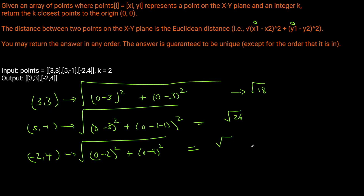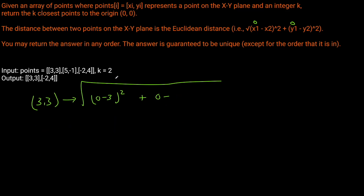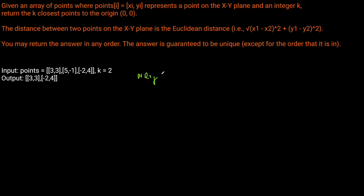But how do we actually solve this question? How do we keep track of the k smallest ones? One naive solution would be to calculate the Euclidean distances for all points, sort them, and return the k smallest. But this requires an O(n log n) solution. There's actually a better solution: use a heap of size k, which brings our runtime complexity down to O(n log k), and when k is smaller than n, this is a better solution.